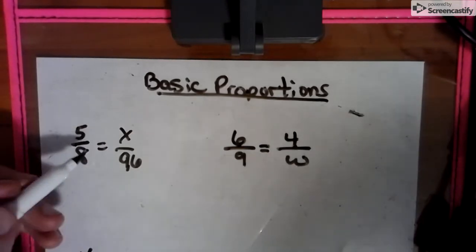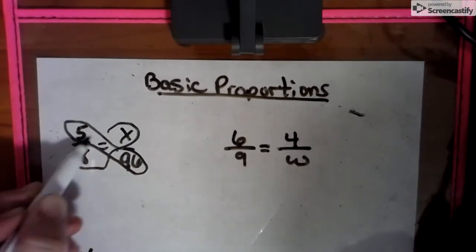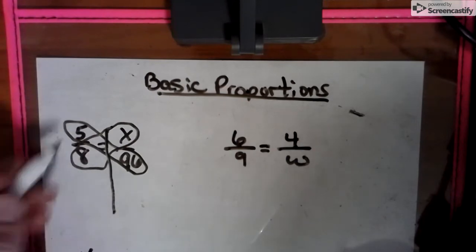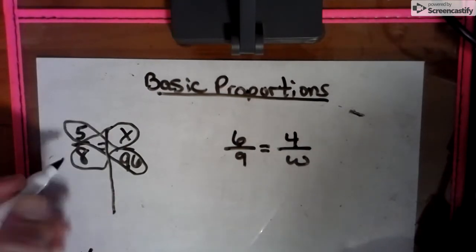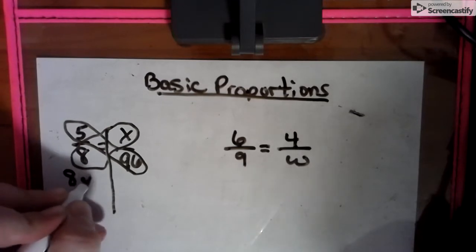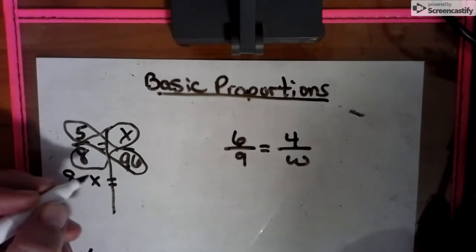So first thing we have to look at is diagonal multiplication. So we're going to circle our diagonals. It looks like a pinwheel or a very sad-looking flower. And we're going to multiply the diagonals. So we have 8 times X. You notice how I'm using a dot instead of an X because it looked like 8XX if I didn't do that.